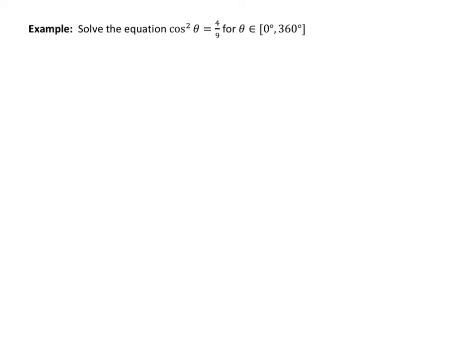Here's our first example: solve cosine² θ equals 4/9 for θ on the interval between 0 and 360 degrees. Remember that cosine² θ means (cosine θ)², which means we can take the square root of both sides. The left side becomes cosine θ, and the right side becomes plus or minus 2/3. The new lesson content is right there — recognizing that removing the square gives us a trig function equals a number, which we can then solve as before.